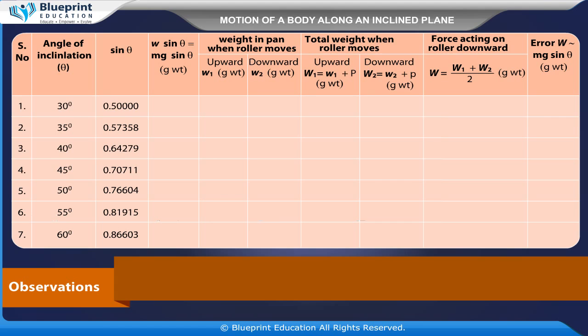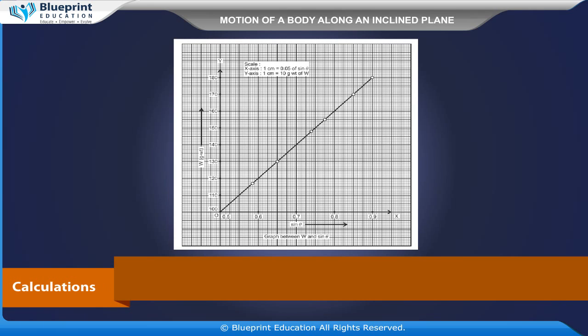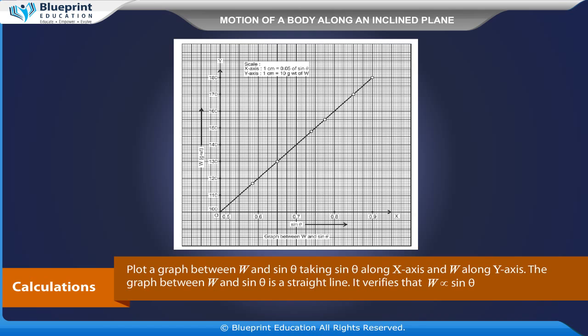Calculations: Plot a graph between W and sin theta, taking sin theta along x axis and W along y axis. The graph between W and sin theta is a straight line.